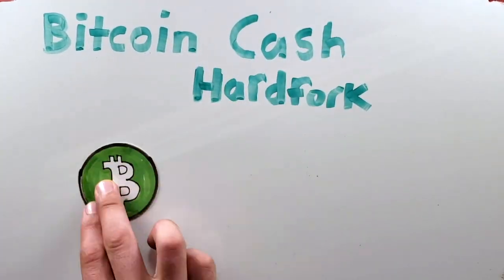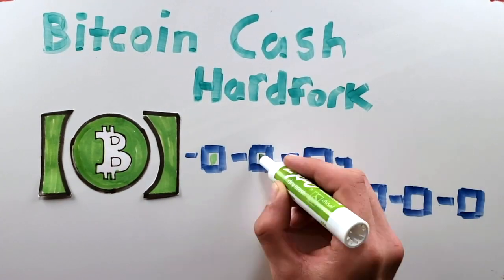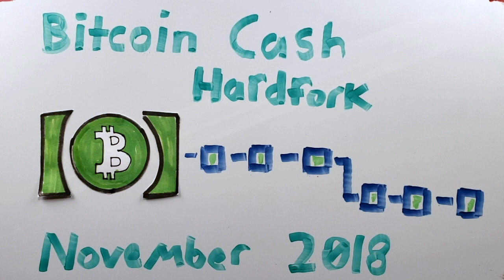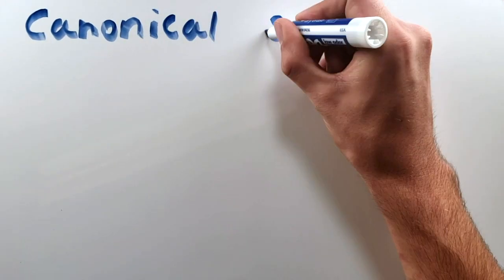This November, Bitcoin Cash is having another scheduled hard fork upgrade. There is some debate in the community on why some of these changes are needed. One of these changes is canonical transaction ordering.